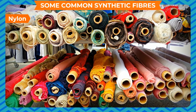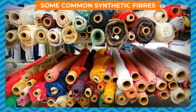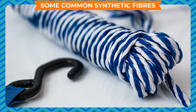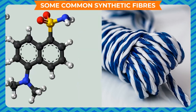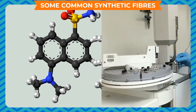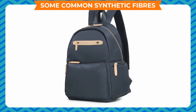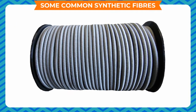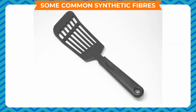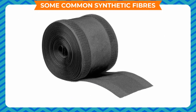Nylon is an artificial fiber made purely by chemicals. It is a thermoplastic material made by forming a very long chain of amide molecules which are obtained chemically from petroleum products. Nylon is light in weight and durable. It is strong and elastic. It is highly heat resistant. It absorbs less water and thus dries up easily.